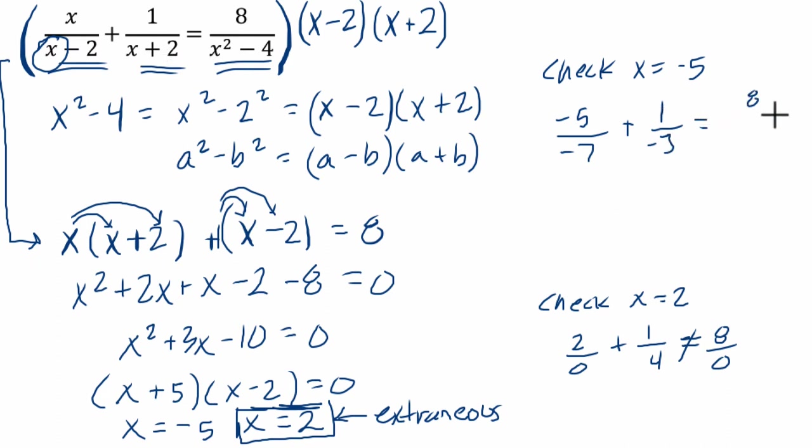equals 8 over 25 minus 4, which is 21. So negative 5 over negative 7 is really a positive fraction. And then we're really subtracting 1 third because adding negative 1 third is the same as subtracting 1 third. So this is just 5 sevenths minus 1 third.